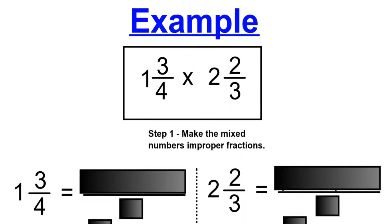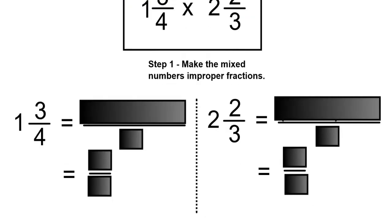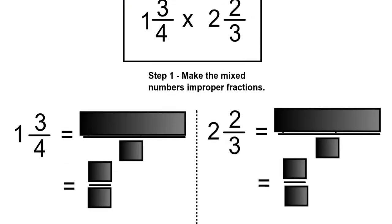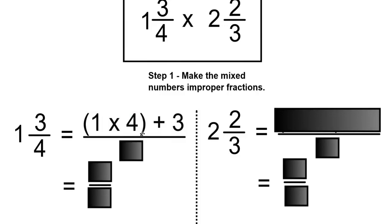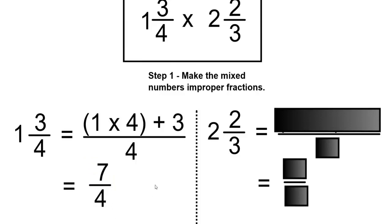1 and 3 over 4 times 2 and 2 over 3. Step 1: make the mixed numbers improper fractions. They're both mixed numbers, so I'll make them both improper fractions. Take the whole number 1, multiply it by the denominator of 4, and then add the numerator of 3. Put this over the denominator of 4. 1 times 4 is 4, and 4 plus 3 is 7, over 4. So 1 and 3 over 4, as an improper fraction, is 7 over 4.